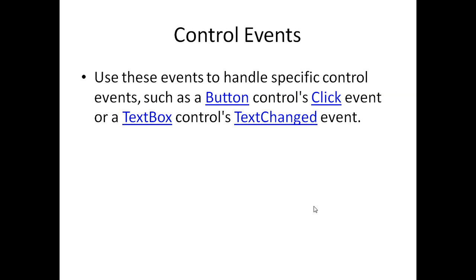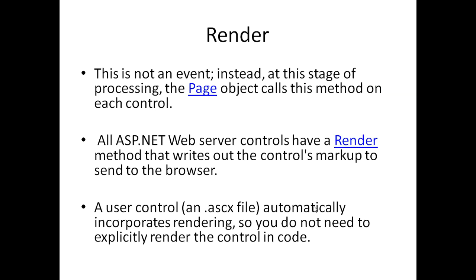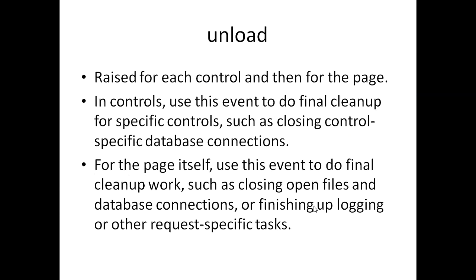Next is Render. Render specifies how a control is going to be displayed or marked up for a specific browser. User controls automatically incorporate rendering, so you don't need to explicitly render the control in code — it happens automatically. Every server control has a Render method that writes out the control markup to send to the browser, defining how it will be displayed on that specific page.